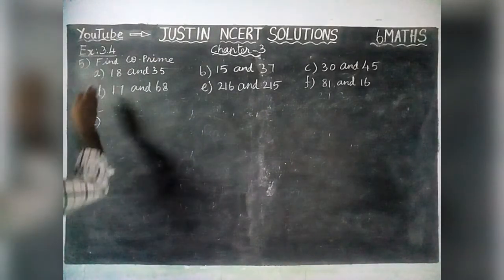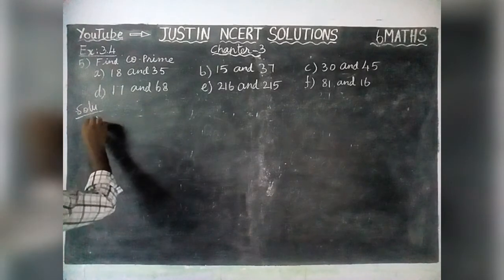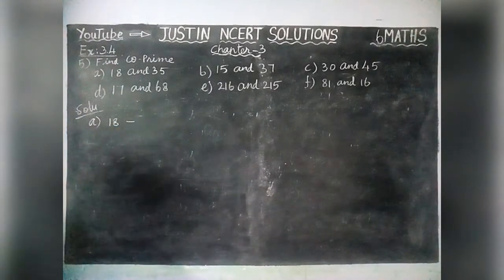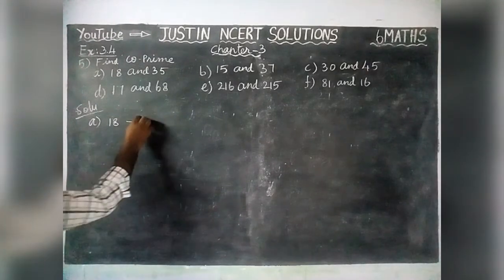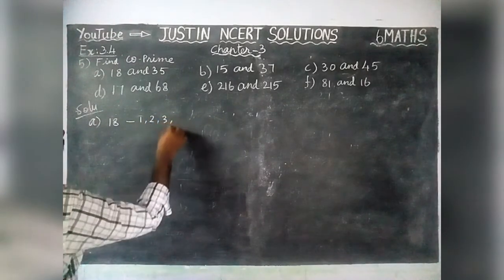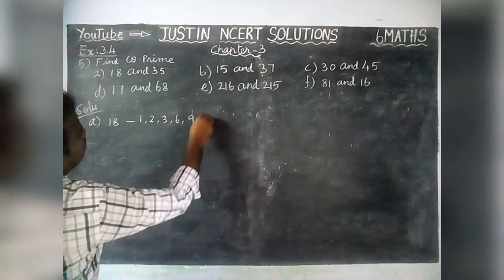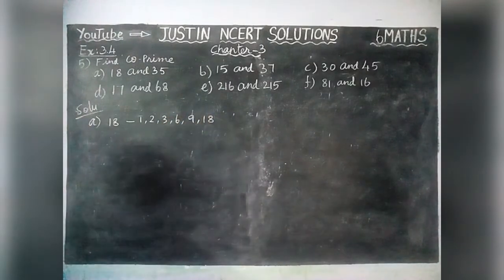First, we are going to find all the factors of the given numbers. Part A: we are going to find all the factors of 18. Factors of 18 are 1, 2, 3, 6, 9, and 18. These are all the factors of 18.